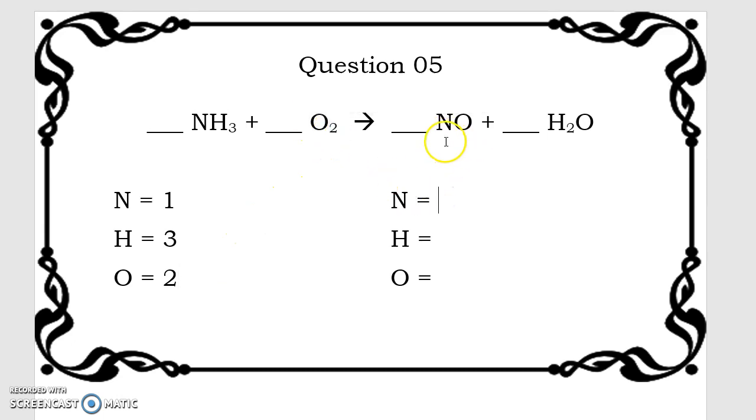On the product side, we have one nitrogen because there's no subscript. We're going to jump over to the hydrogens now because we want these to be in the same order. So we have two hydrogens and we are going to take a look at oxygens. We have one here for H2O and we have one here for NO, so there are two oxygens.